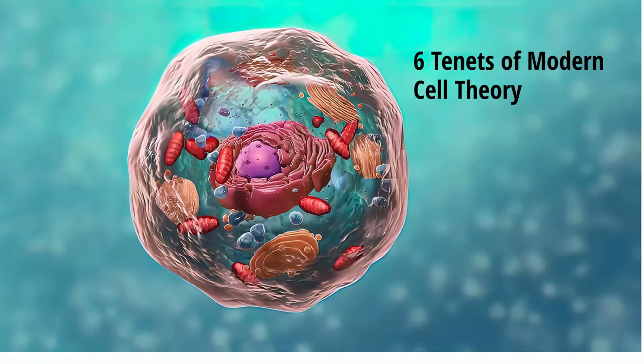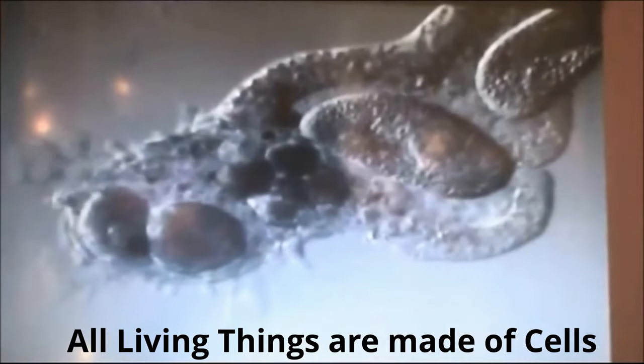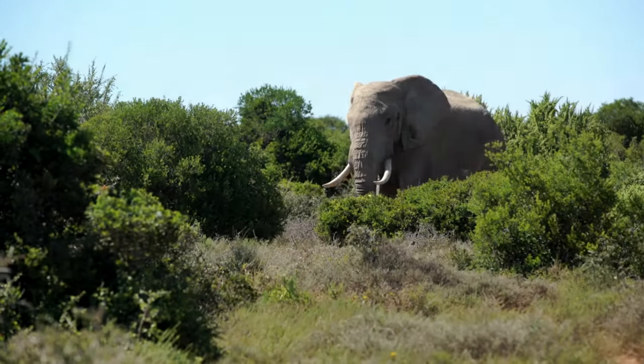Let's go over six points of the modern cell theory. 1. All living things are made of cells. Organisms can be single-celled or made of many cells.